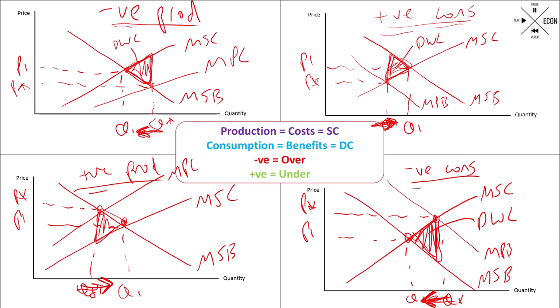Just to recap: first, identify the socially optimum position where marginal social costs equal marginal social benefits. Then draw an arrow to reflect whether it has been over-consumed or produced, or under-consumed or produced. Create the new equilibrium, draw the new privately optimum position, and your dead weight loss points the same way as the arrow you drew. If you didn't get all those diagrams correct, have another go until you've mastered them. Thank you very much.